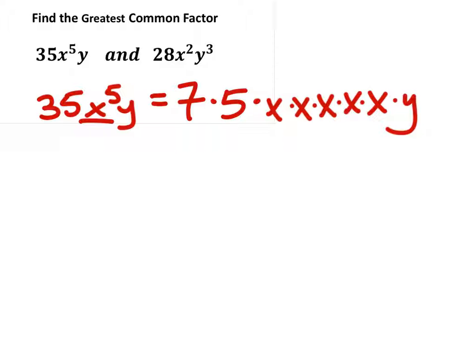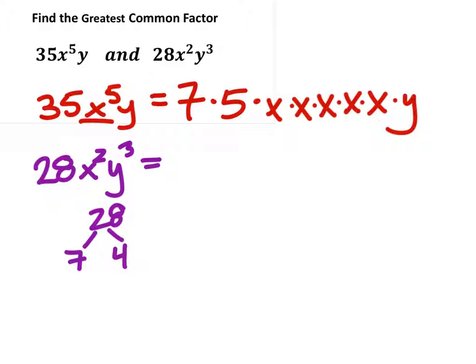So let's look now at 28x squared y cubed. And again, I'm looking for factors of these. If it's an exponential form, I'll expand them. So let's look at the 28, and 28 can be split up into 7 and 4. Now you may have used 2 and 14 as well, and that would be okay.